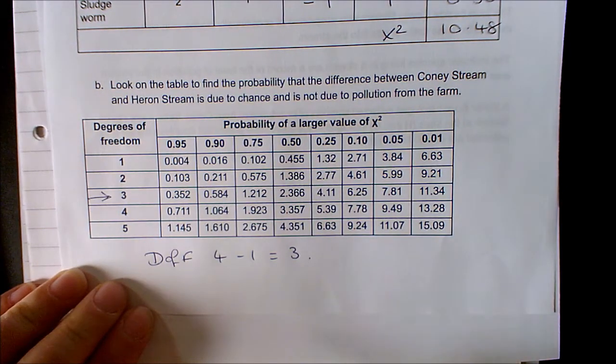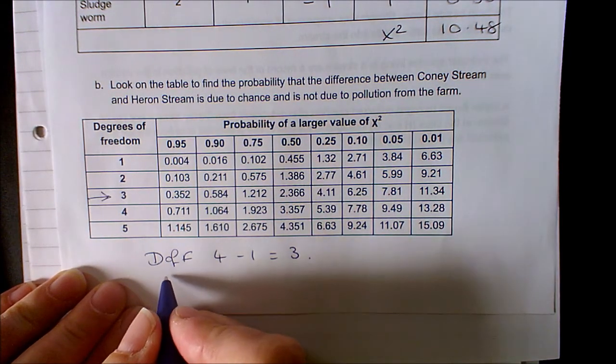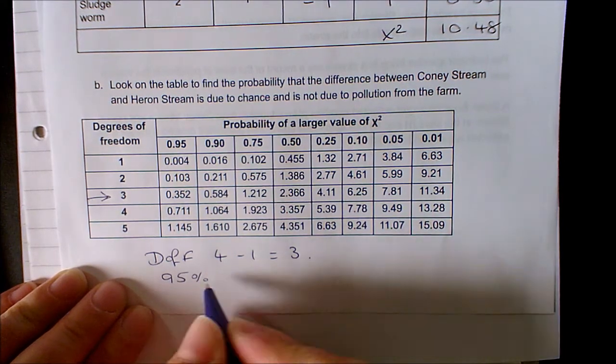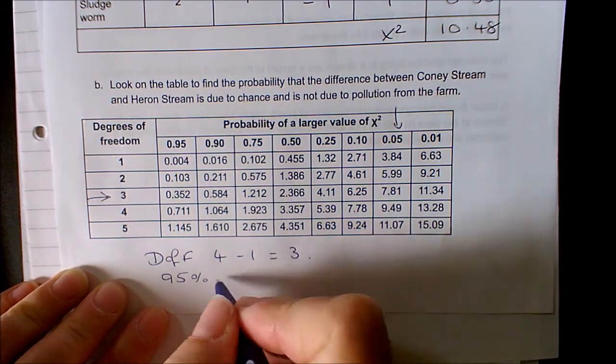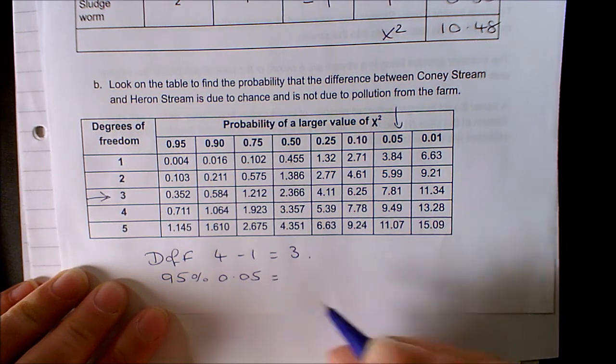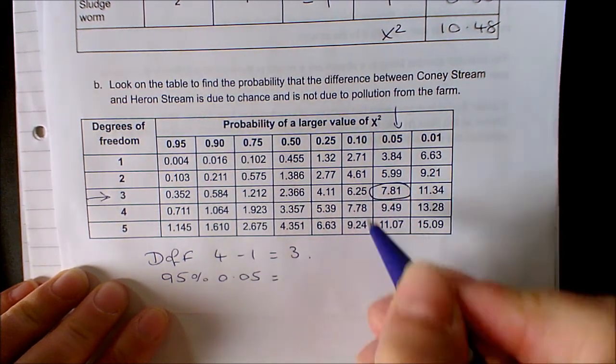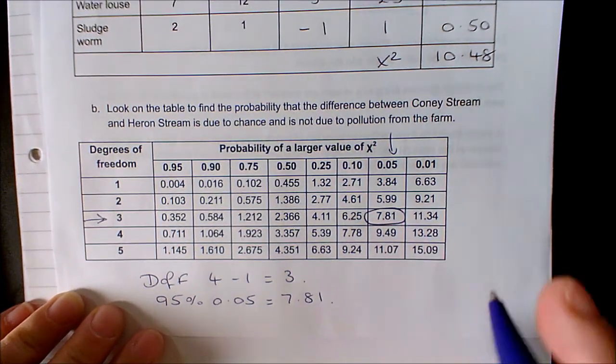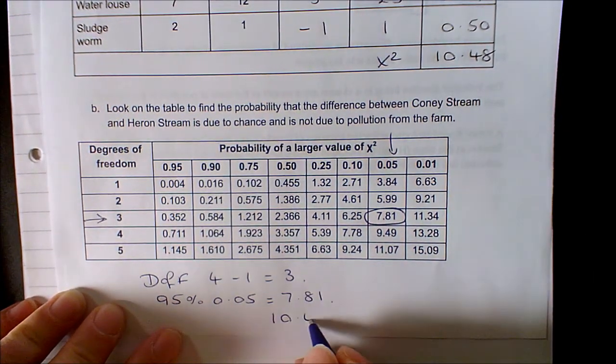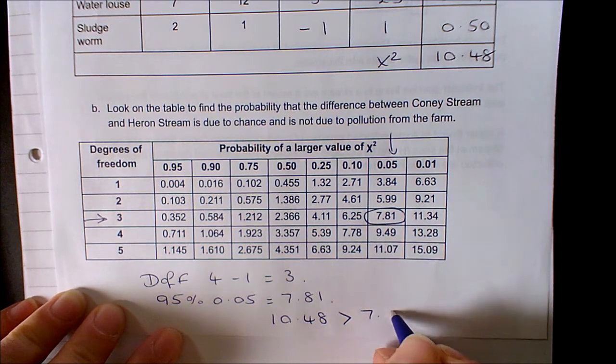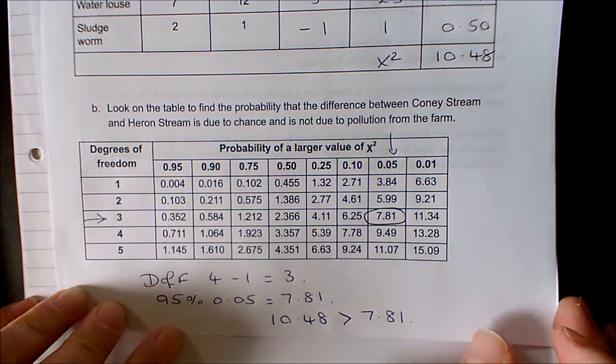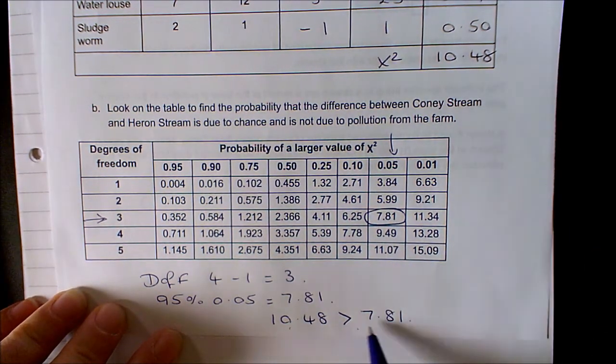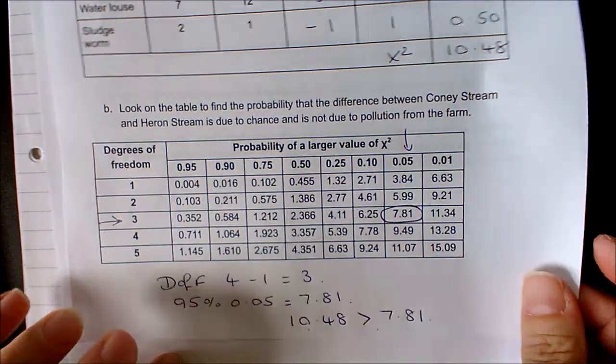So we're looking along this line here, and we use a value of 95 percent, so I'm going to look at the 0.05 column. The value I'm looking at is 7.81, and we can see from our results that 10.48 is greater than 7.81. Our chi-squared value is greater than the one we find in the table.